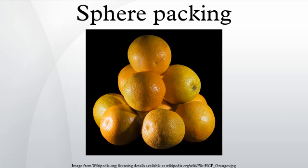The proportion of space filled by the spheres is called the density of the arrangement. As the local density of a packing in an infinite space can vary depending on the volume over which it is measured, the problem is usually to maximize the average or asymptotic density. For equal spheres, the densest packing uses approximately 74% of the volume. Random packing of equal spheres generally has a density around 64%.